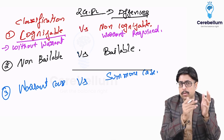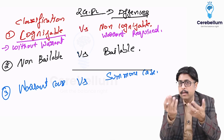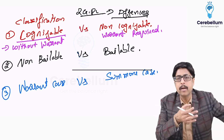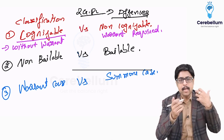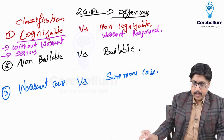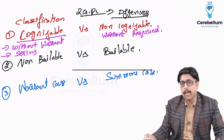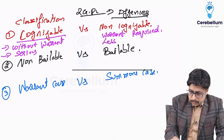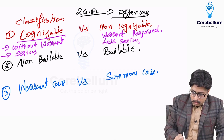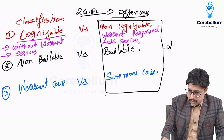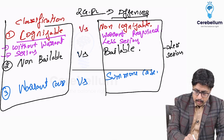Which one will be the more serious offense — cognizable or non-cognizable? In a cognizable offense, the person can be arrested without a warrant. In serious offenses like rape or murder, you will not wait for the warrant to be issued because the criminal will run away. So cognizable offenses are more serious offenses. Non-cognizable offenses are less serious.